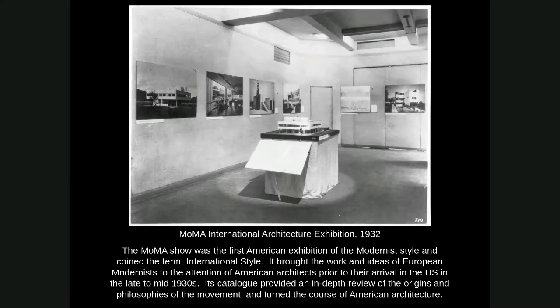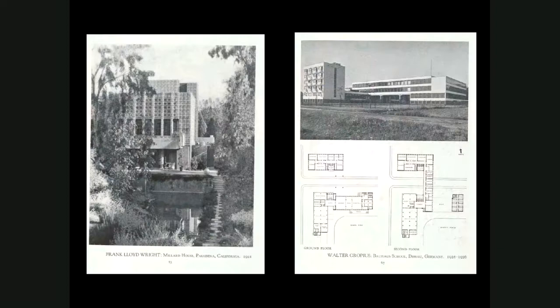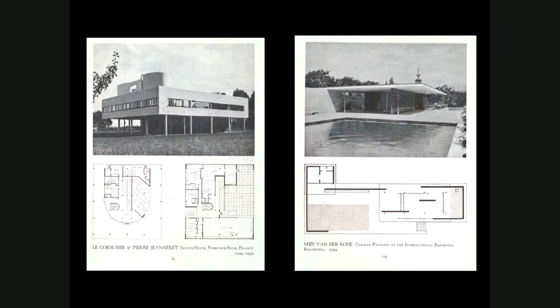These are some historic views of the exhibition. Right front and center in this gallery is a model of Villa Savoye — so Corbusier is heavily on display. We see a couple of photos of Villa Savoye on the wall to the left, just as we had seen in our earlier lecture. These are pages from the exhibition catalog featuring projects we've talked about: the Millard House in Pasadena, the Textile Block House on the left, the Bauhaus by Gropius on the right. Then Villa Savoye again on the left, the Barcelona Pavilion on the right. These were all really important works of architecture at the time, and there were many others on exhibit during the show as well.